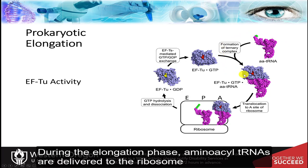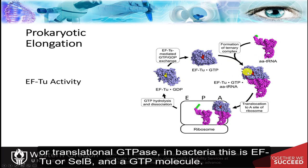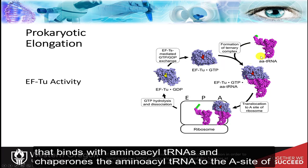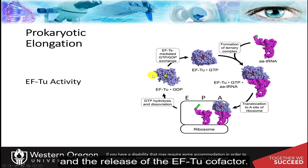During the elongation phase, aminoacyl tRNAs are delivered to the ribosome in the form of a ternary complex consisting of the tRNA, the elongation factor or translational GTPase — in bacteria this is EF2, or cell B — and a GTP molecule. EF2 is a GTP hydrolase enzyme that binds with aminoacyl tRNAs and chaperones the aminoacyl tRNA to the A site of the ribosome. This causes the hydrolysis of GTP to GDP and a phosphate group, and the release of the EF2 cofactor.